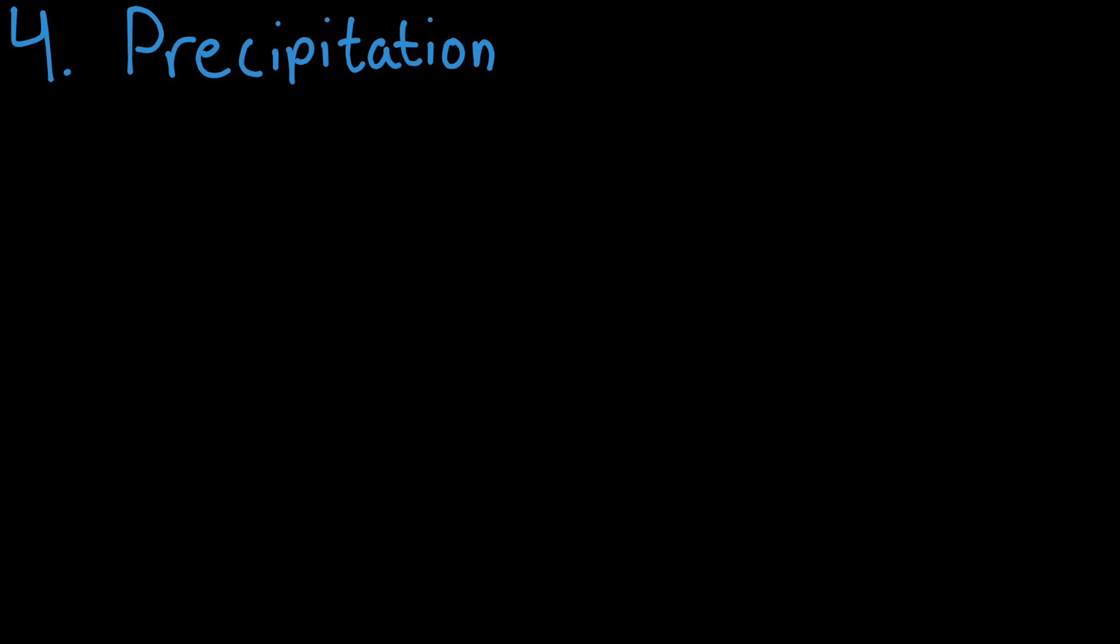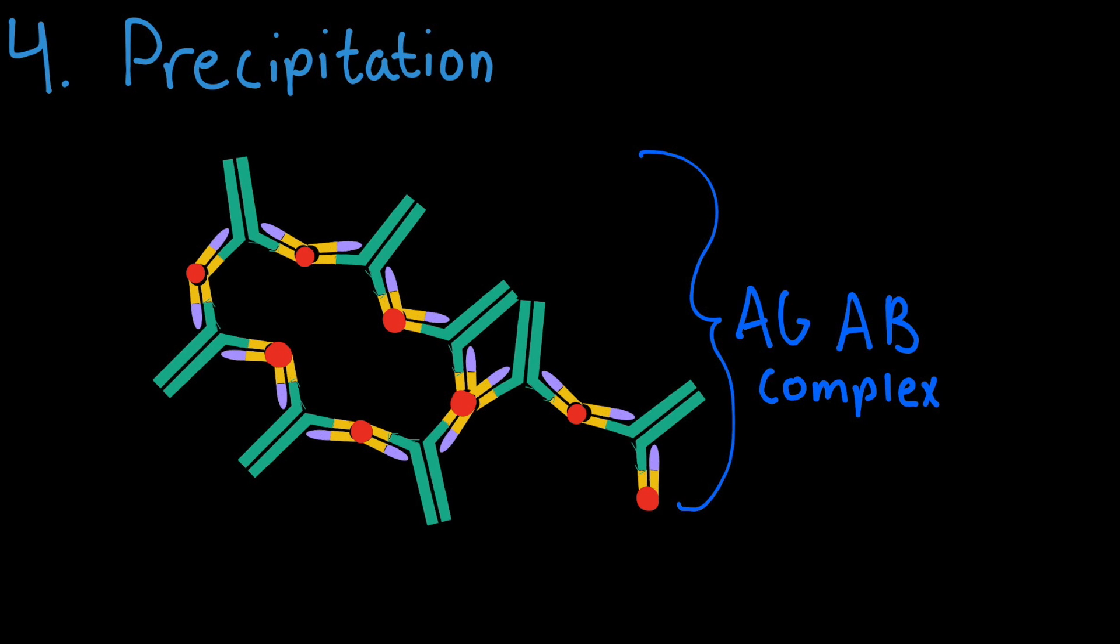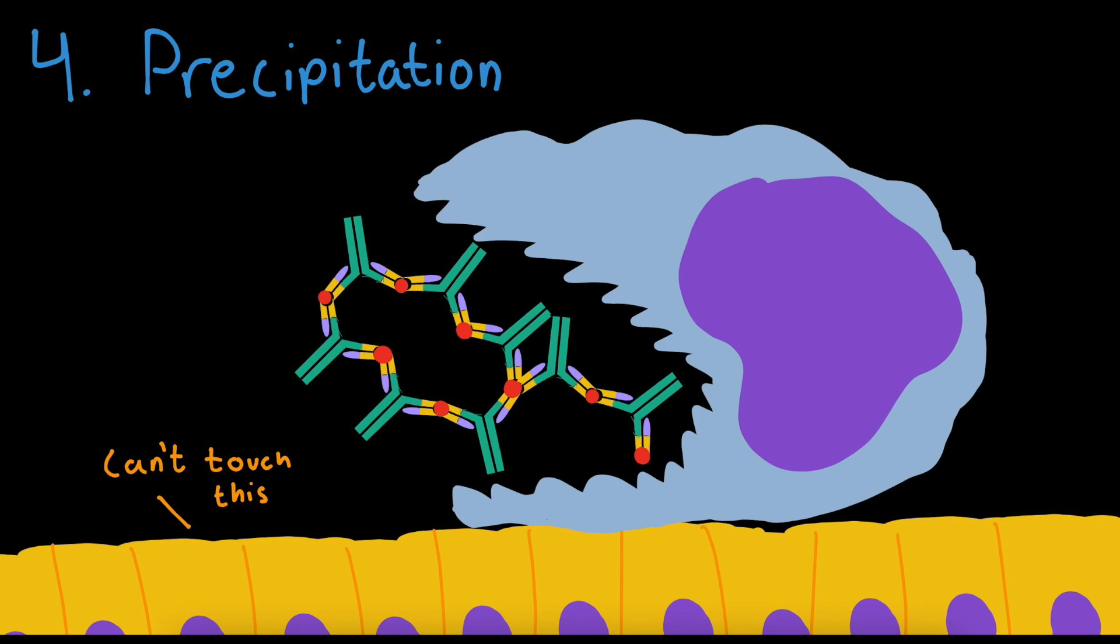The fourth mechanism antibodies perform includes precipitation in which antibodies, primarily IgM, attach to the antigens from a foreign pathogen to form the antigen-antibody complex, which prevents the pathogen from binding to the surface of healthy cells. This complex is big enough to be phagocytized.